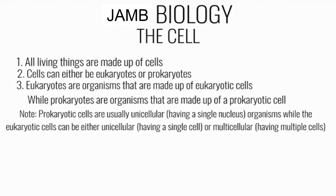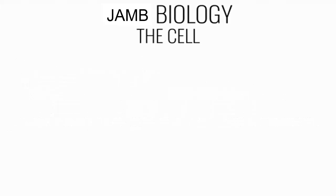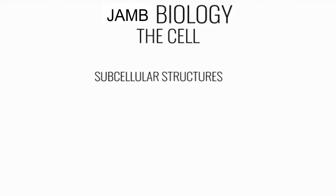Prokaryotic cells are made up of a single cell. On the other hand, eukaryotic cells can be unicellular or multicellular, meaning they can be made up of a single cell or multiple cells. The cell is made up of different parts called subcellular structures, otherwise known as cell organelles.